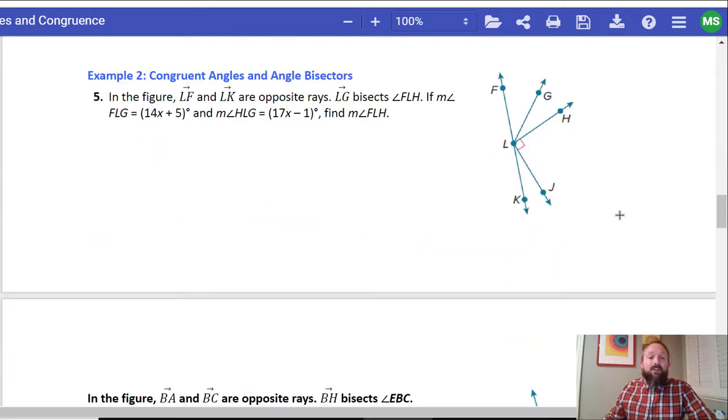So let's go on to example two, congruent angles and angle bisectors. In the figure, ray LF and ray LK are opposite rays. So that means they make straight angles. LG bisects FLH. All right. Cool. So LG. So I know that these two are congruent angles because there's an angle bisector. If the measure of angle FLG is equal to 14X plus 5. And the measure, so FLG, so this is equal to 14X plus 5. And HLG, so this is equal to 17X minus 1. Find FLH.